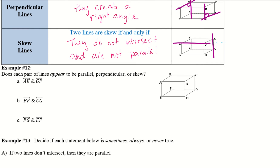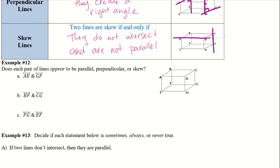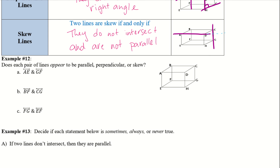We want to decide if these lines appear to be parallel, perpendicular, or skew. Highlighting the lines so we can see where they are: we have AE and GF — these are definitely skew lines. They're not parallel, but they also do not intersect.